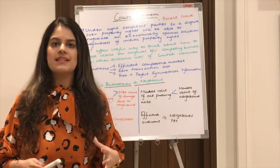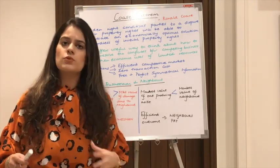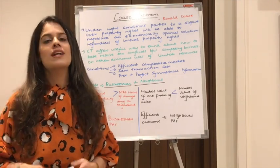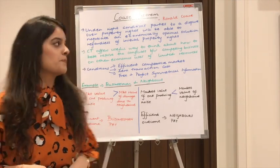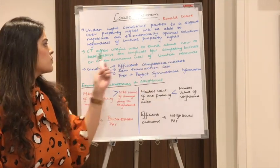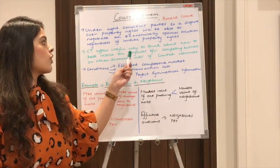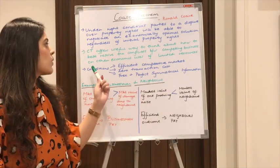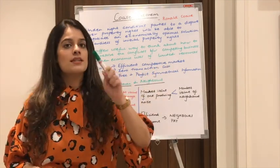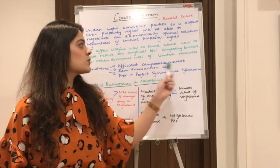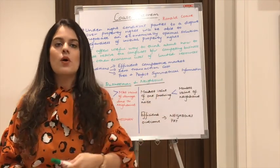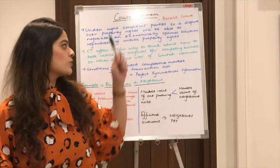This basically means that when there is a dispute between two parties, we can reach an optimal solution through negotiation. Coase theorem offers a useful way to think about how to best resolve conflicts between competing business or other economic uses of limited resources — the problem of who gets what can be solved through Coase theorem.